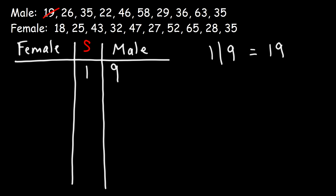Now let's move on to the 20s. The ages are 22, 26, and 29 in ascending order. So we're going to write 2, then 6, then 9. Now between 30 and 40, we have 35, 36, and another 35. So let's write 3, and then 5, 5, 6.